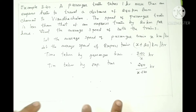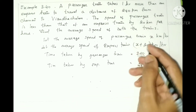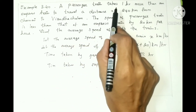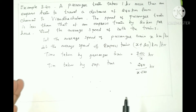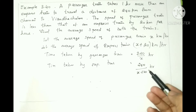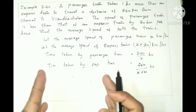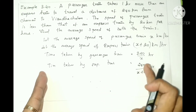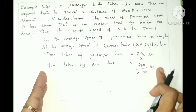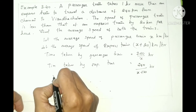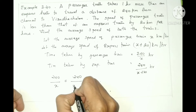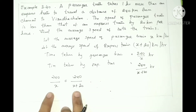Now we equate. We form an equation. The passenger train takes one hour more, so the passenger train time is one hour extra. Therefore: 240 divided by x, minus 240 divided by x plus 20, equals 1.